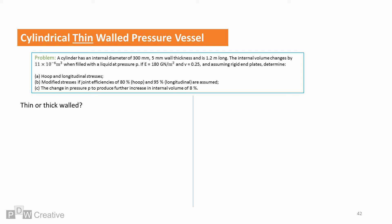Okay, so first I need to check if the vessel is thin-walled. D over T is 60. I am looking at the diameter here. And this is greater than 20, so the vessel is thin-walled.